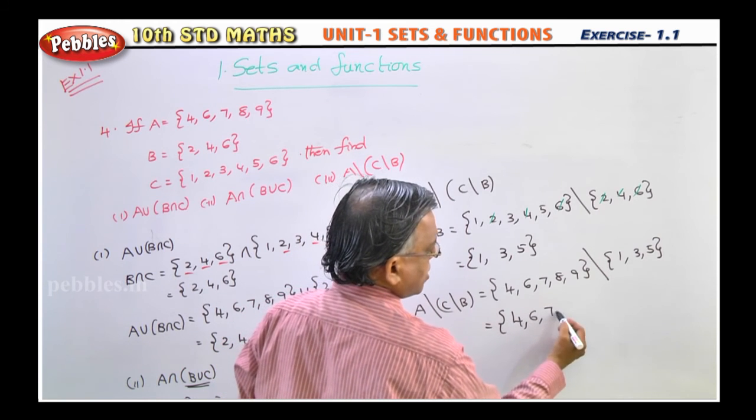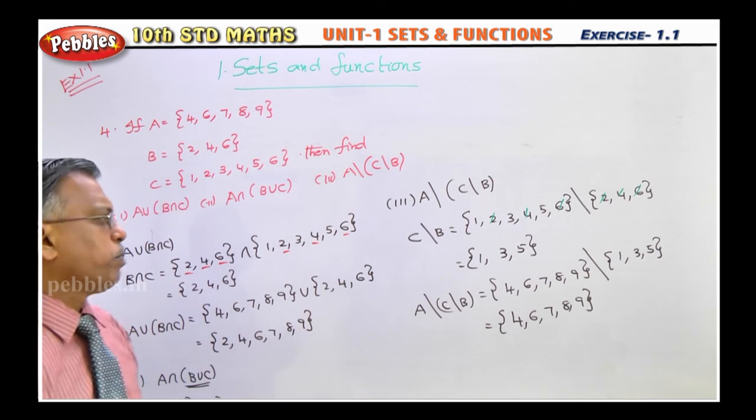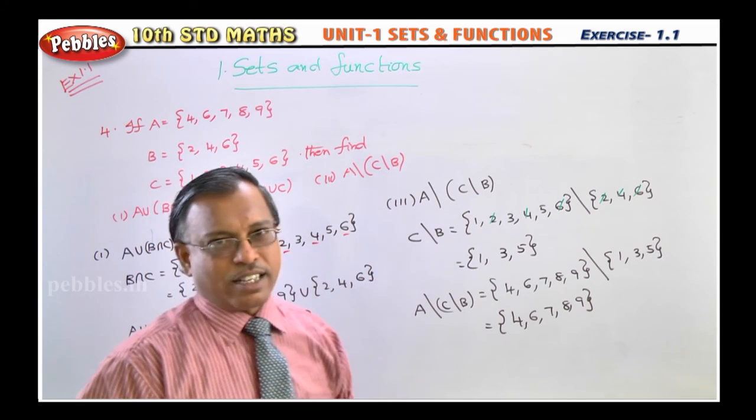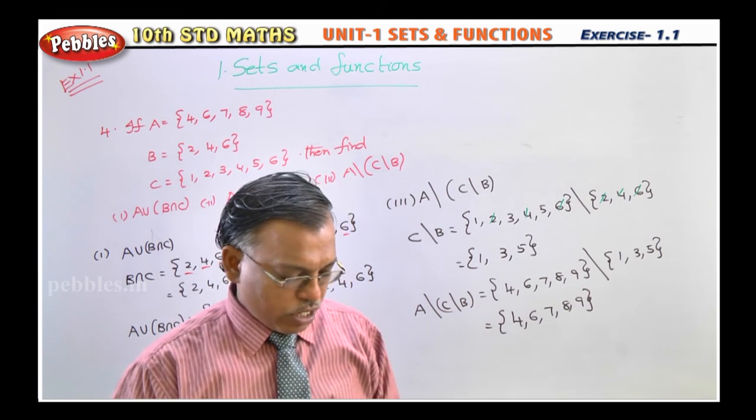4, 6, 7, 8, 9. That's it. Very simple. Only thing is intersection you should understand, union you should understand, difference you should understand. Once you understand, it's a piece of cake for you. Okay. Next, we will see the next.